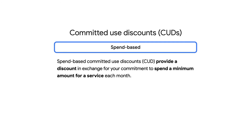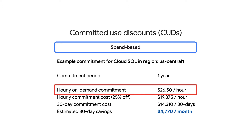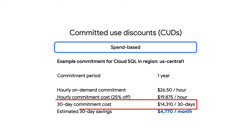Spend-based CUDs provide a discount in exchange for your commitment to spend a minimum amount for a service each month. They are purchased and measured in terms of dollars per hour. A limited number of services support spend-based commitments, such as Cloud SQL. As you can see in this example Cloud SQL CUD, the commitment amount is defined based on the on-demand price. You then agree to pay a monthly discounted fee for the commitment for the duration of the term.